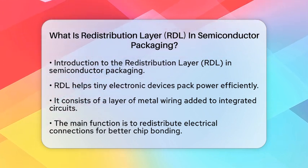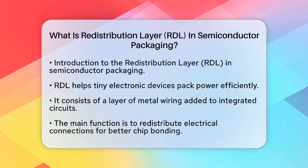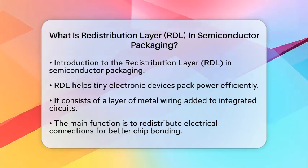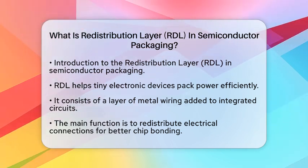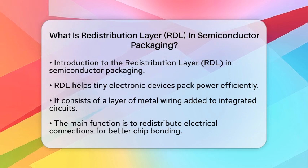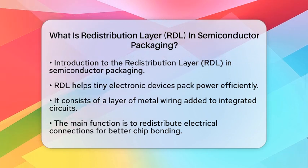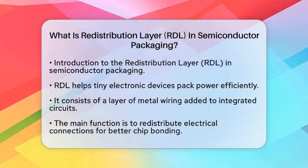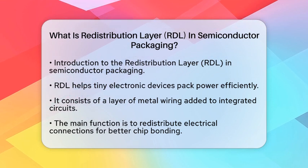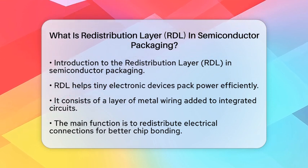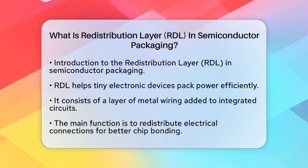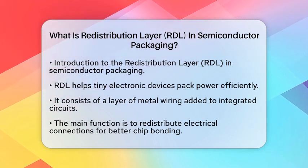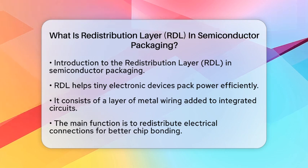The redistribution layer is essentially a layer of metal wiring added to an integrated circuit. Its main job is to redistribute electrical connections, allowing for more efficient and flexible chip-to-chip bonding. This is especially important for devices that need to be compact yet high-performing.